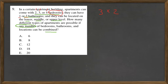And they can be located on the lower, middle, or upper level, which is three options. So then we take three times two, which is six times three, equals eighteen. Our answer is D.